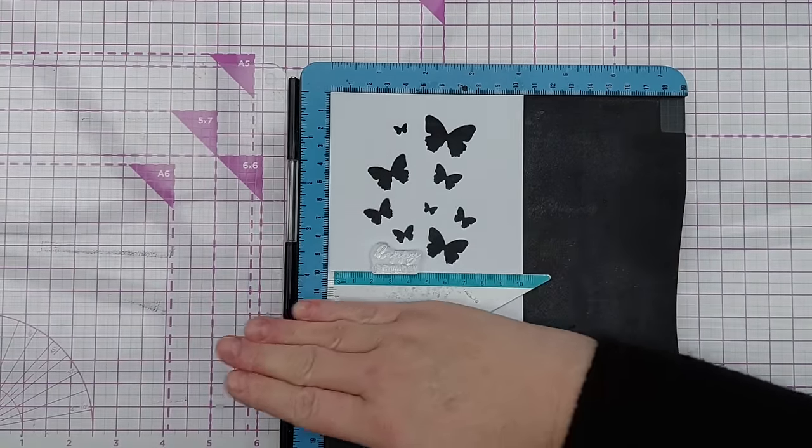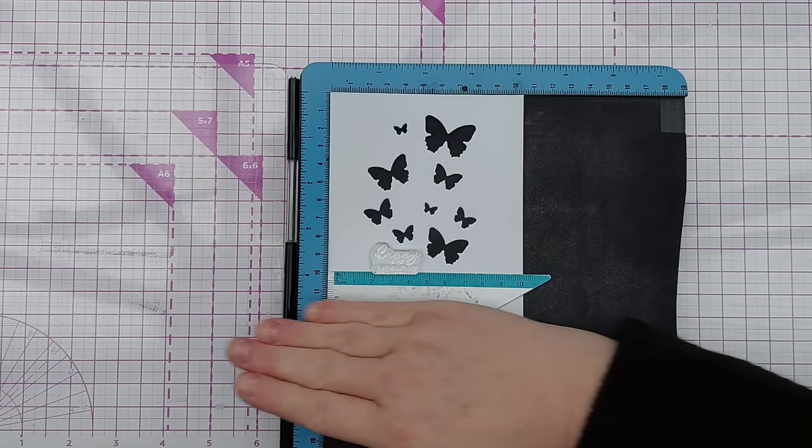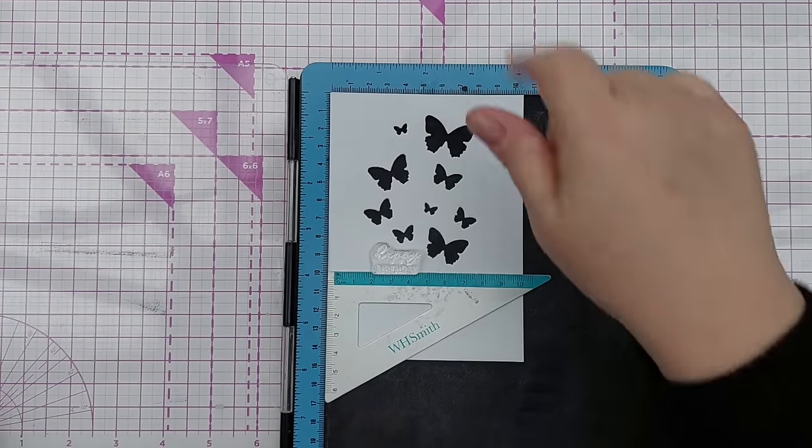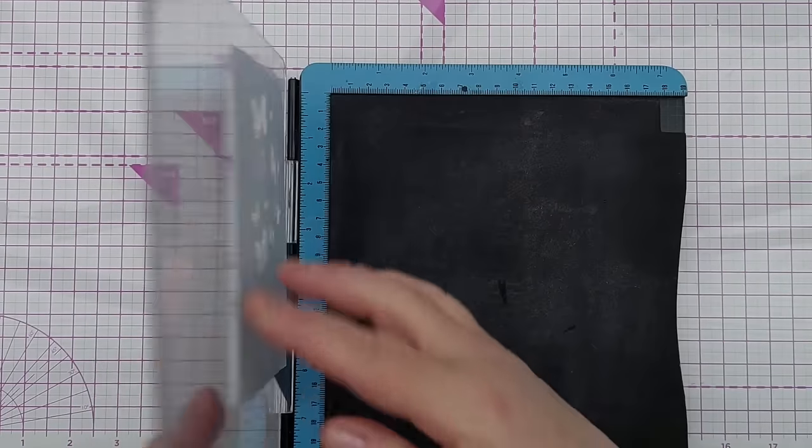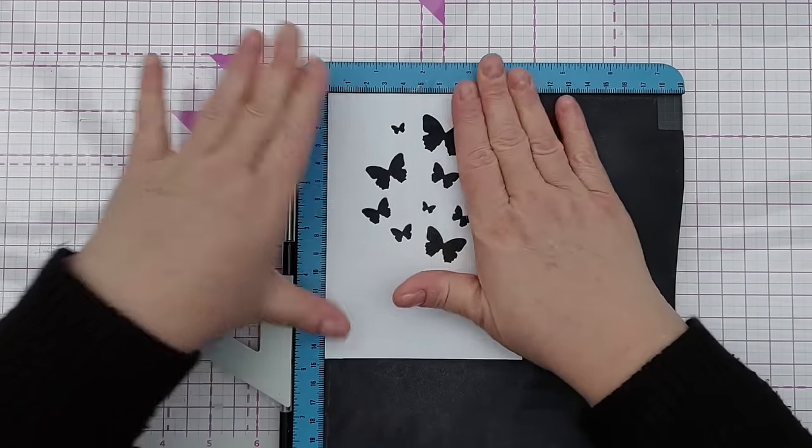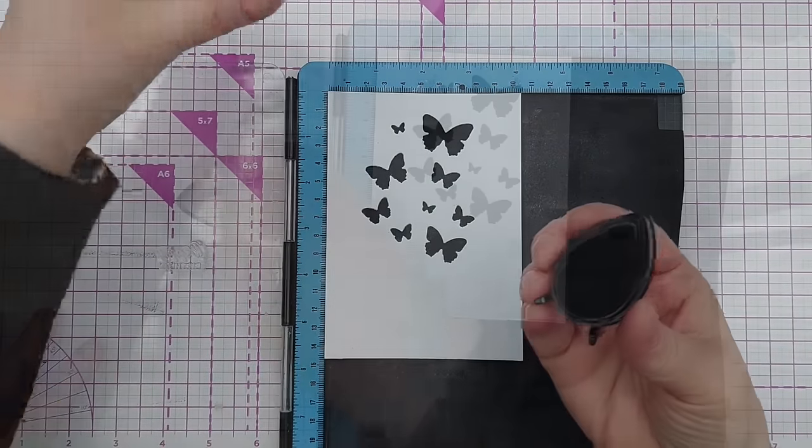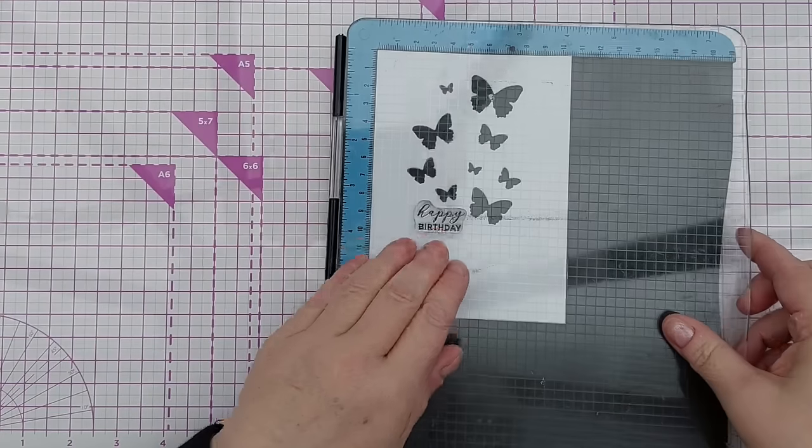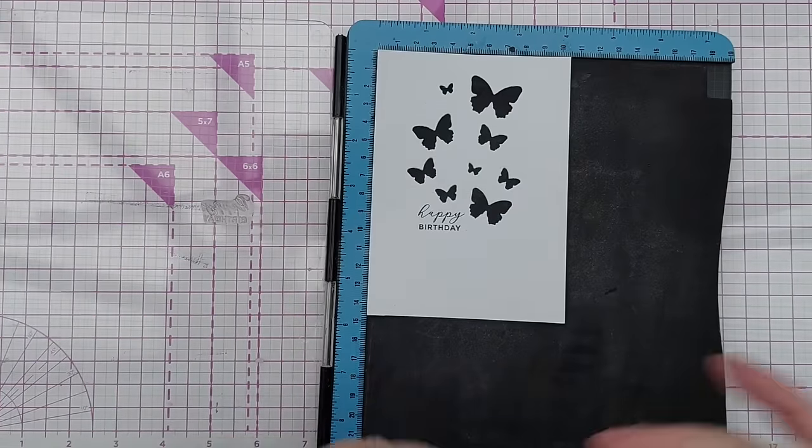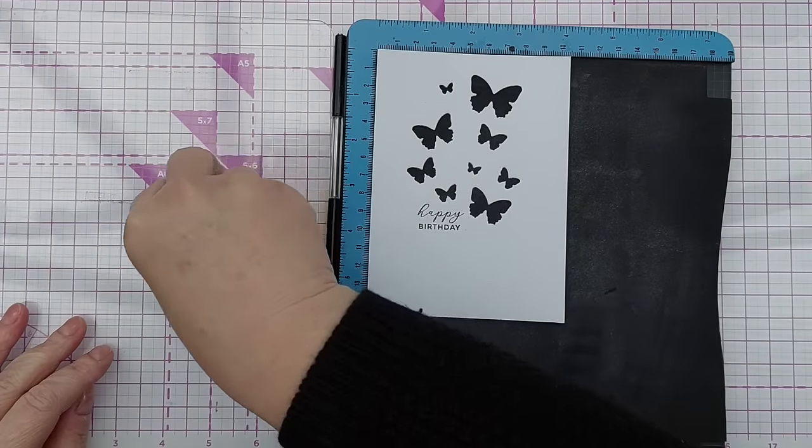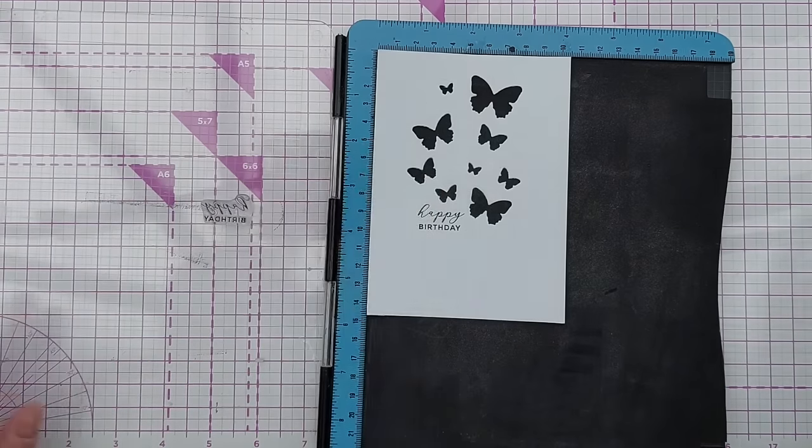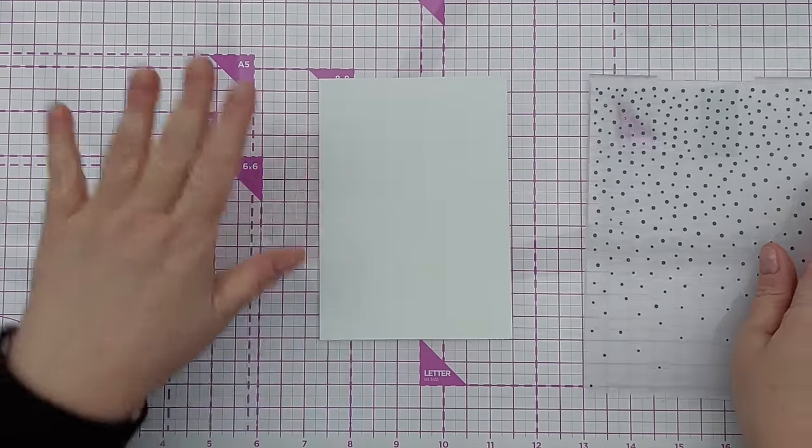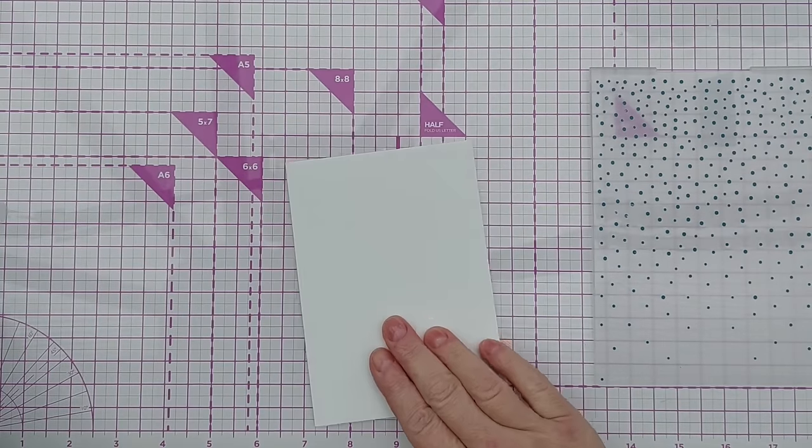And I've got my set square there just to make sure that that birthday is all lined up perpendicular to the edge of the card panel. So I'm going to pick that up, pop that back right in the corner there. I'm going to use black ink just to keep things simple. That looks good but I'm going to give it one more bit of ink to make it a little bit darker.